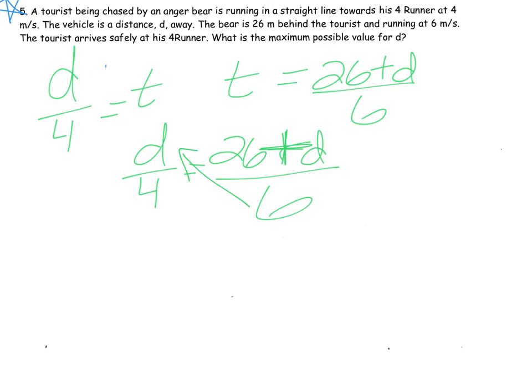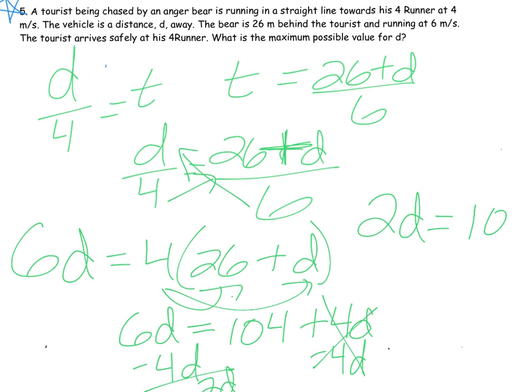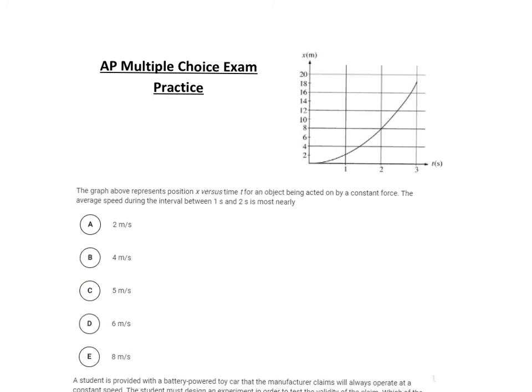At this point it's algebra, so we're going to do some cross multiplication. Six times d, so on this side we have 6d. We want to cross that 4 up, so that means 4 is being multiplied or distributed into this. That gives us 6d is equal to 104 plus 4d. We want to isolate the d's, so get them both on the same side. This would go away and we'd have 2d left over, so essentially 2d is equal to 104. Divide by 2, and then d is 52 meters. A little different, a little more challenging, but same equations.